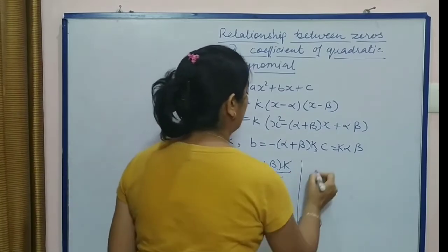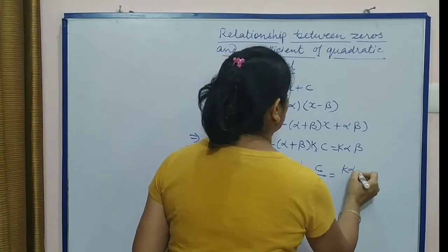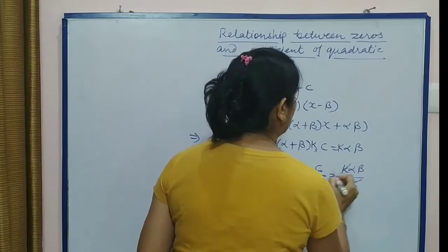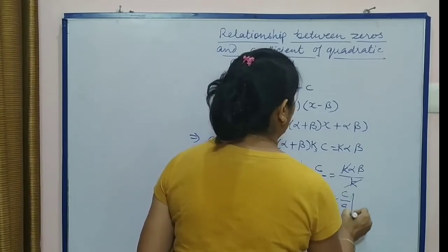In the same way, when we calculate c/a - what is c? k × αβ upon a. a is k. k, k cancel out. That means αβ is c/a.